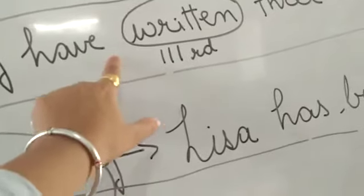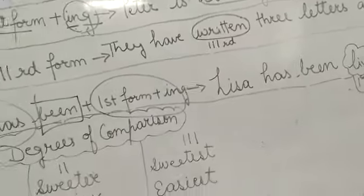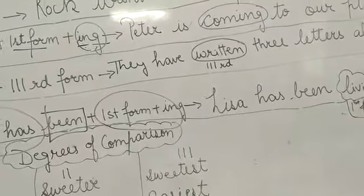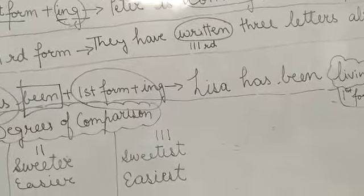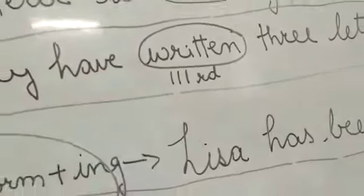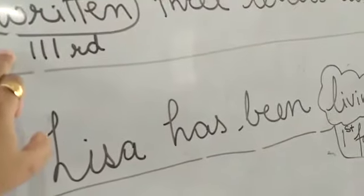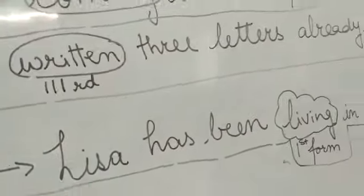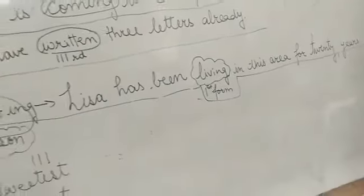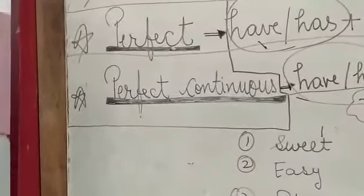Children, wherever you see have or has, just close your eyes and say yes, this is perfect tense. This is perfect tense. Why? Because have is written here. They have written: write, wrote, written. Written is the third form. You can see clearly here three letters, or whatever, that is the predicate.